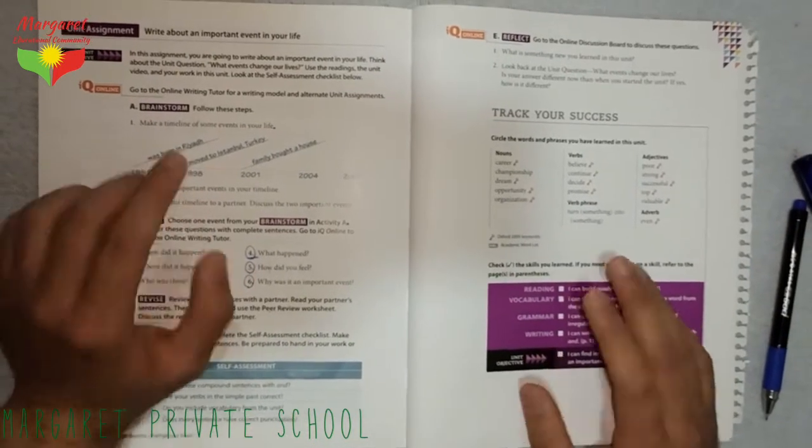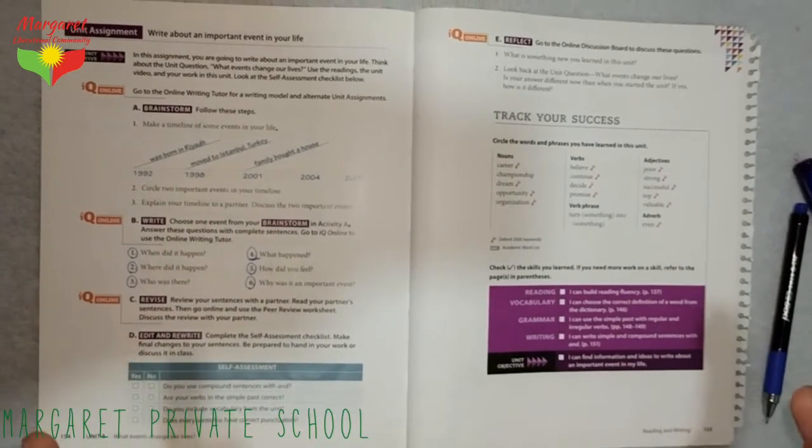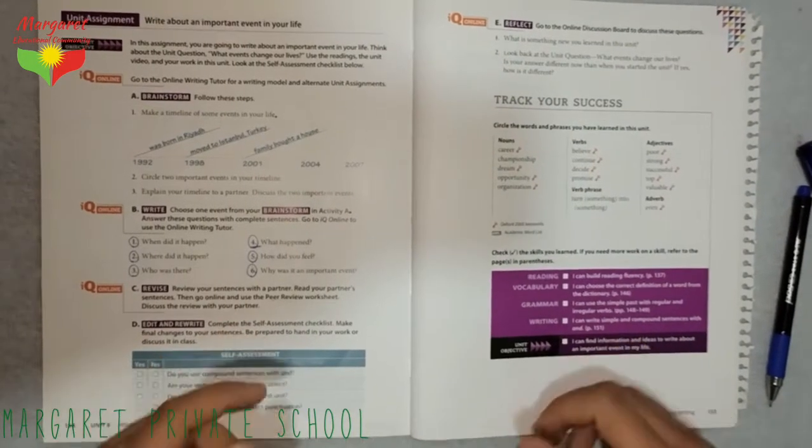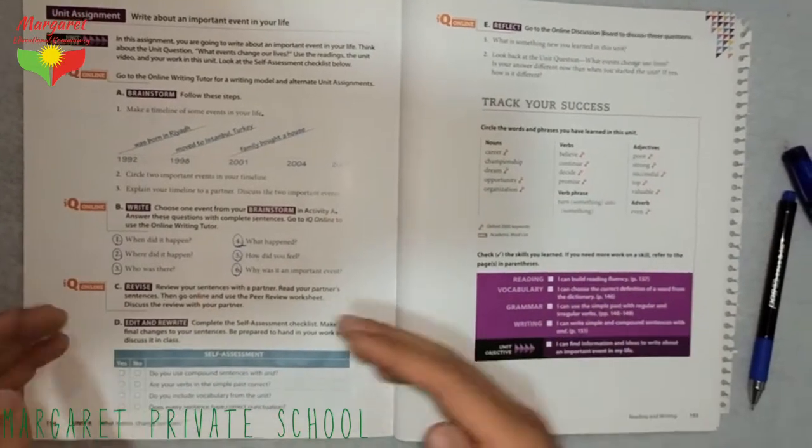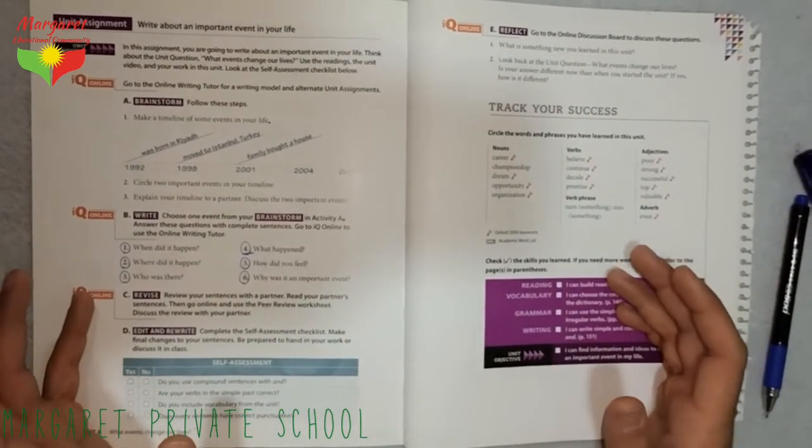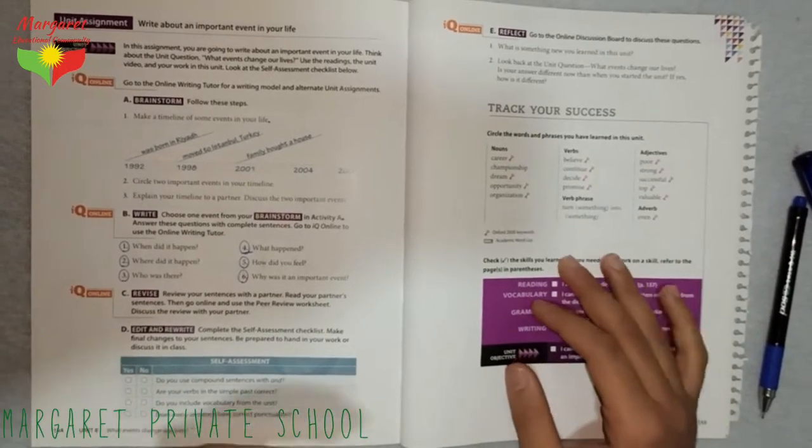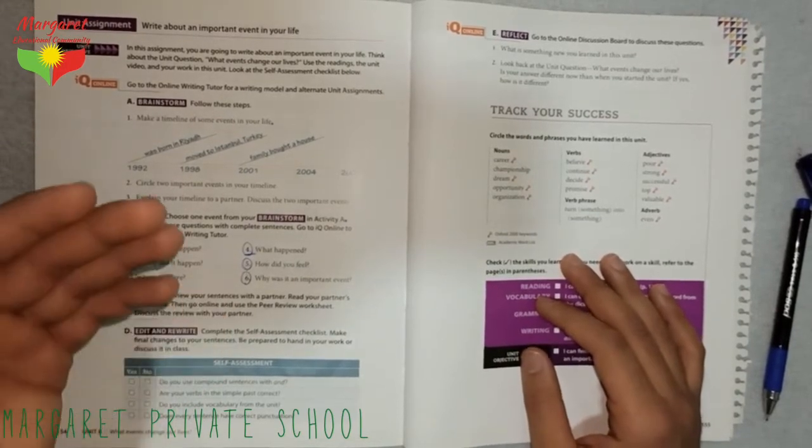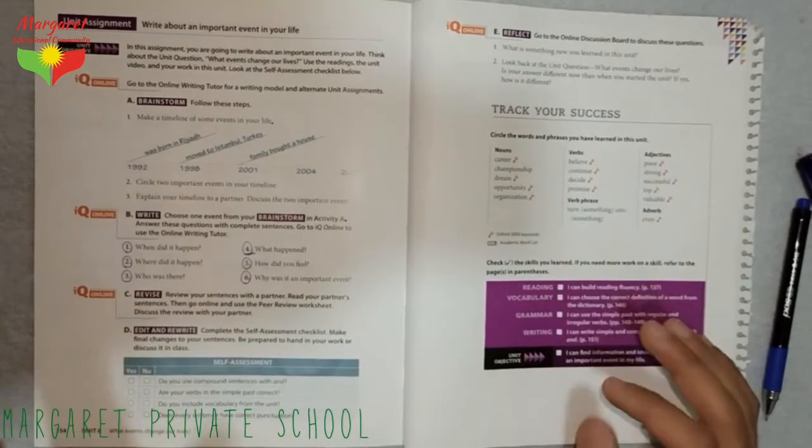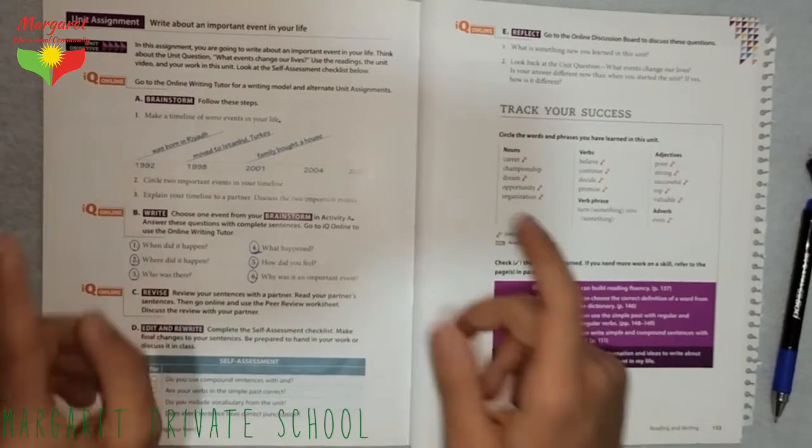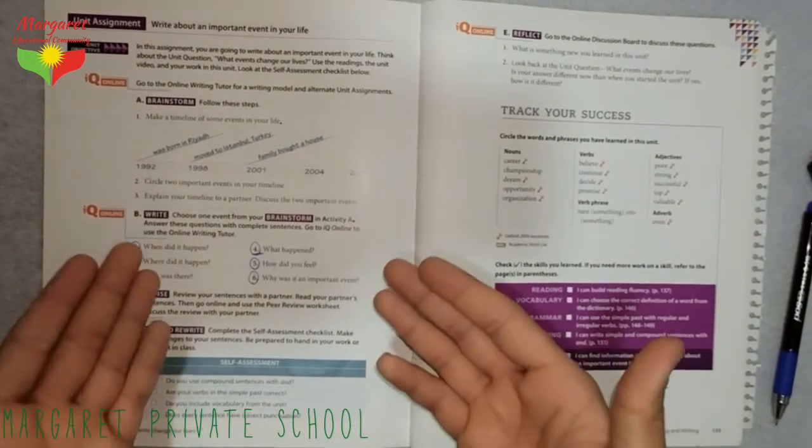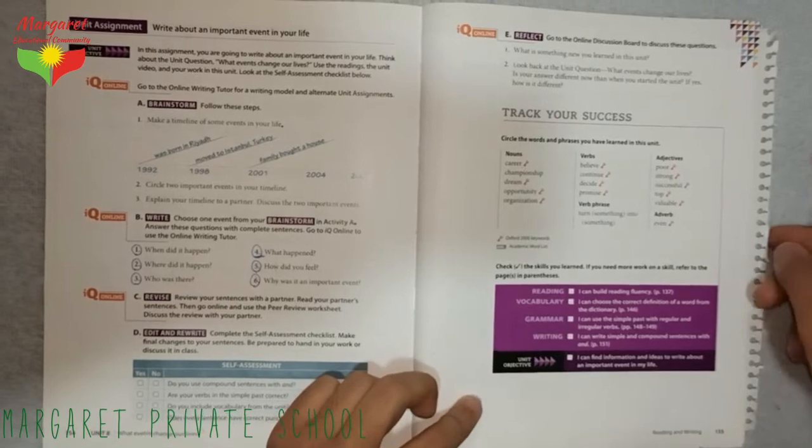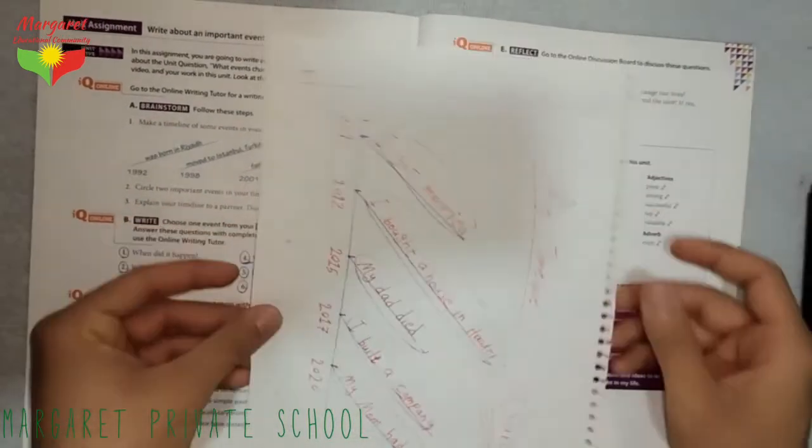In this unit, we write about an important event in our life, so you have to make up a timeline for yourselves. In this timeline, you can mention the name of four or five events that happened in your life. I have prepared something for you, my dears, to help you understand more.